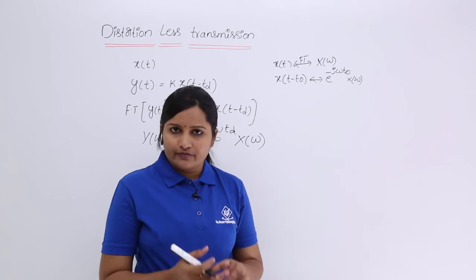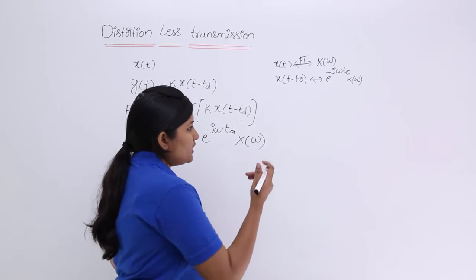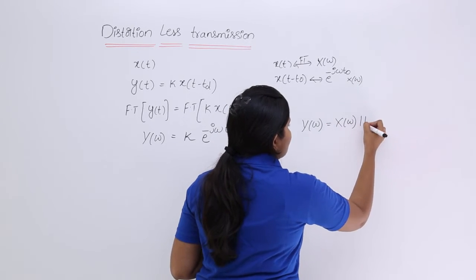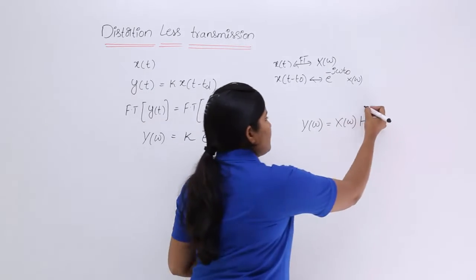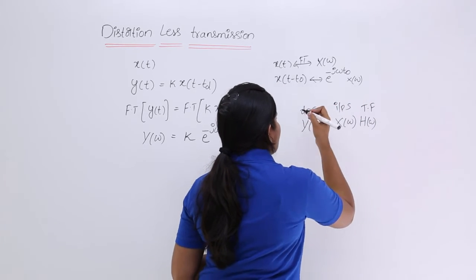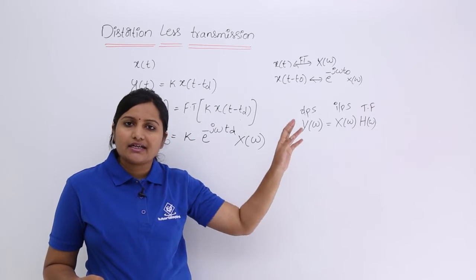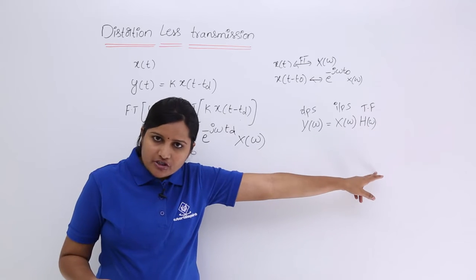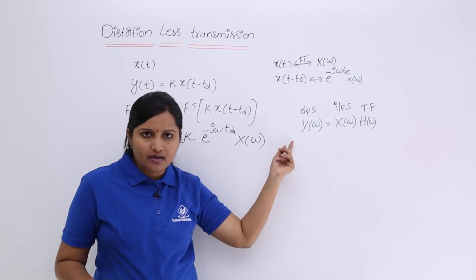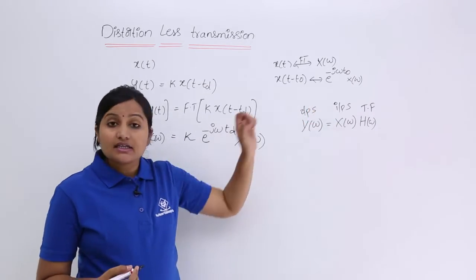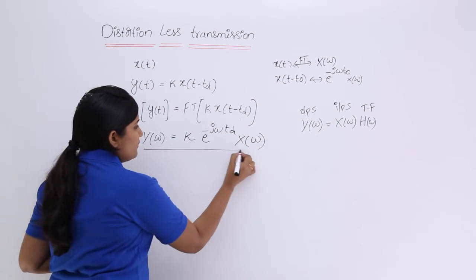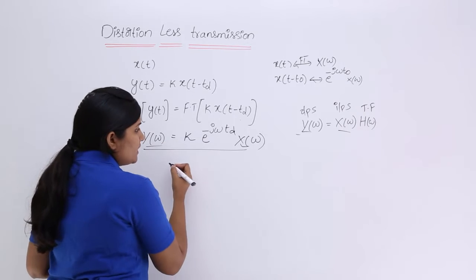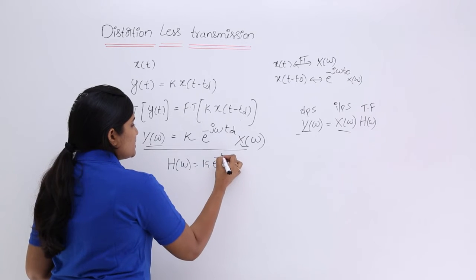From the fundamentals of signals and systems, the output spectrum equals the input spectrum times the transfer function H(ω). The transfer function is the ratio of the output spectrum to the input spectrum: H(ω) = Y(ω) / X(ω). Comparing our derived equation with this relation, we get the transfer function for a distortionless system: H(ω) = K · e^(-jωTD).